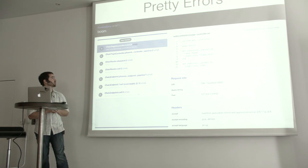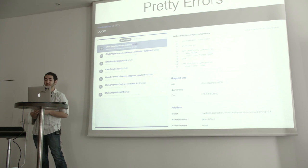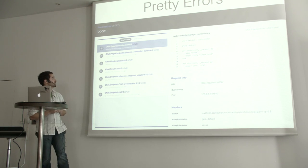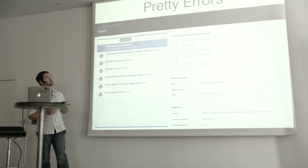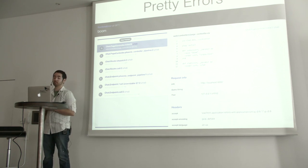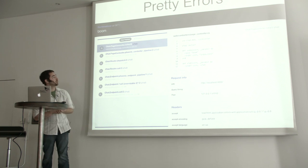We have pretty errors now. At ElixirConf US, we had a text rendering that said something went wrong, here's what we think the stack trace was. Now we get nice pretty errors — you can click through the stack trace and see the code on the right, showing which line of code raised the exception.